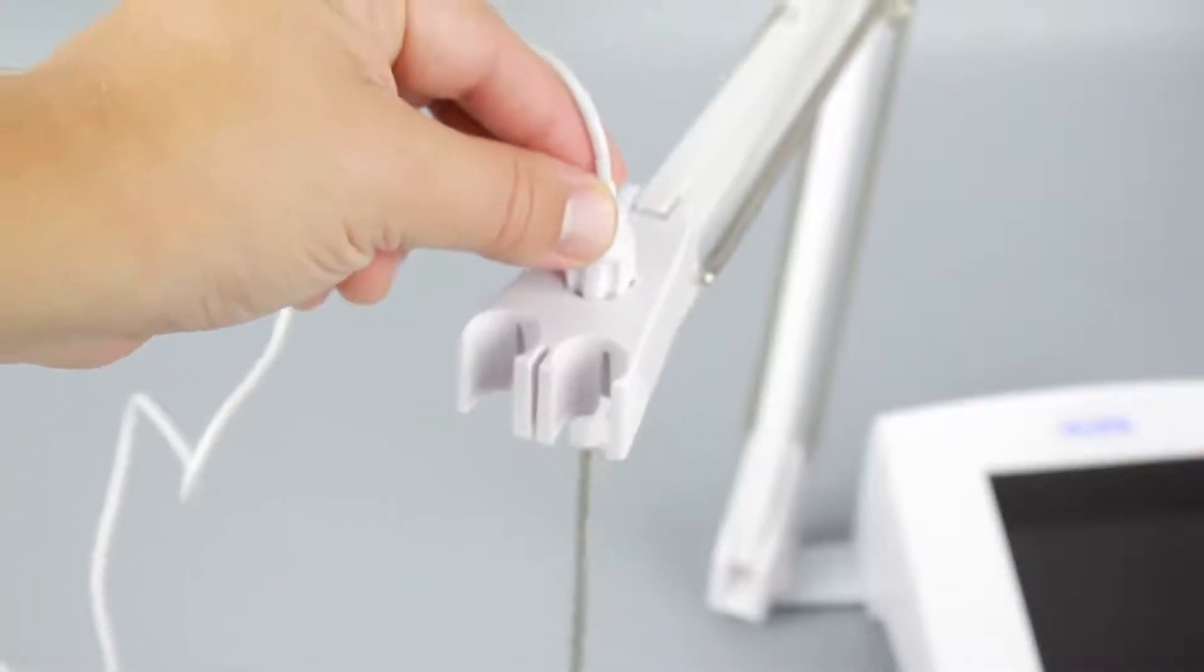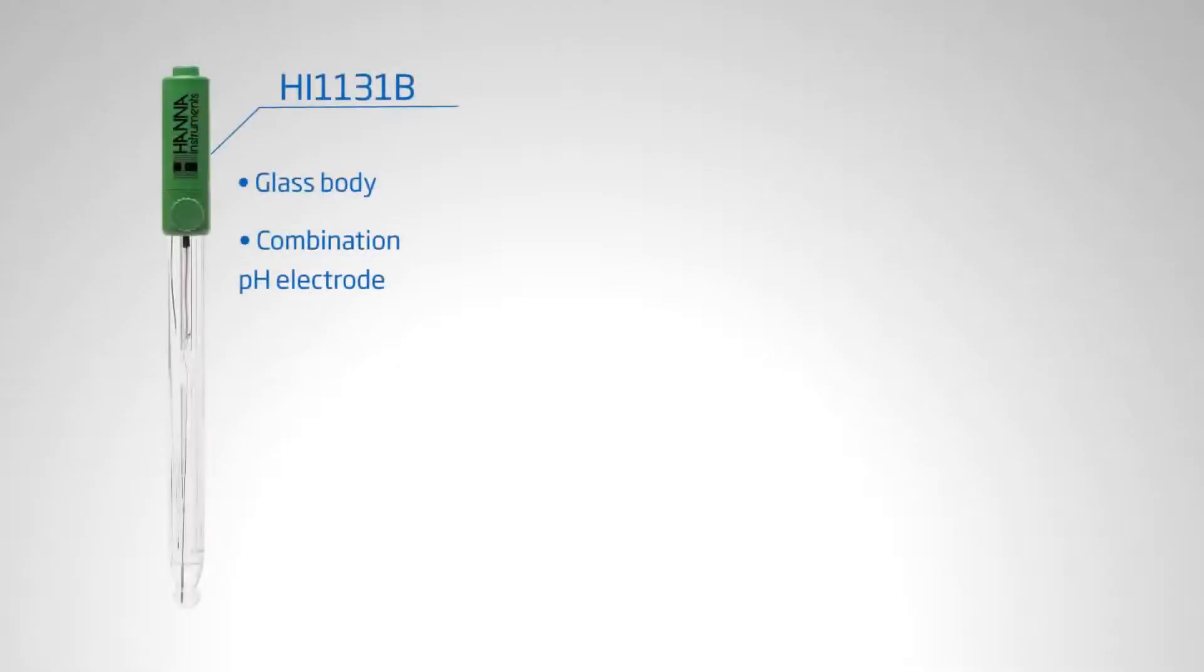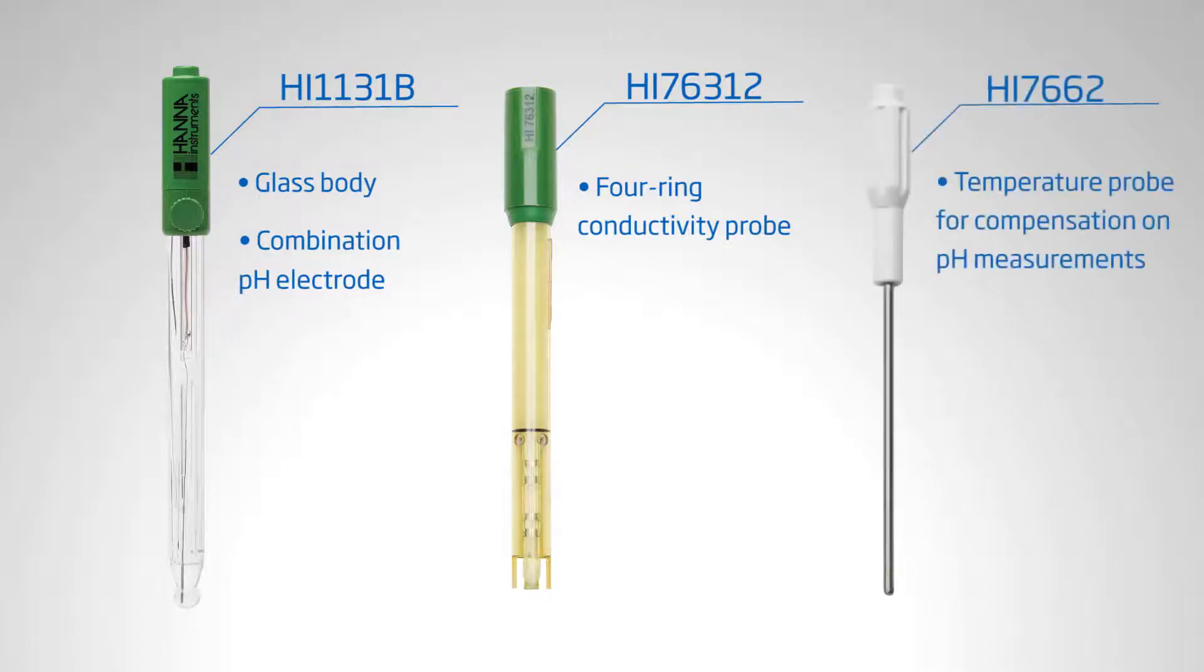To set up your meter, first insert the probe and electrodes into place. The meter is supplied with the HI1131B glass body combination pH electrode and HI76312 four-ring conductivity probe. You'll also find the HI7662 temperature probe for compensation on pH measurements.